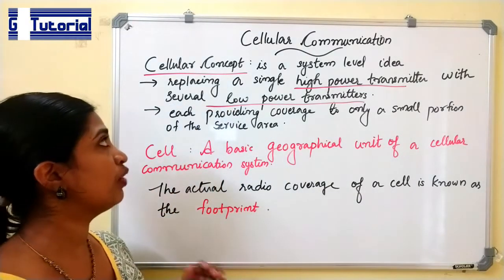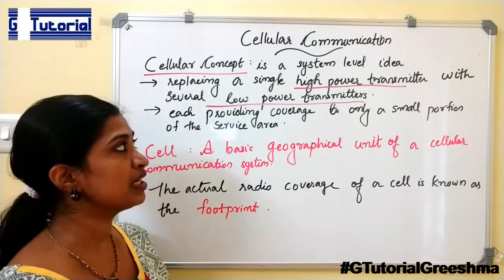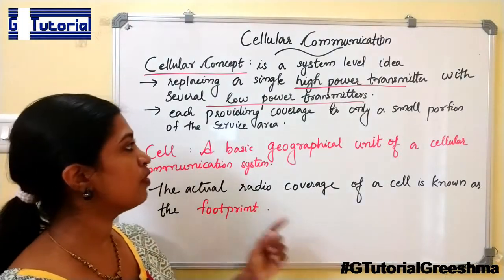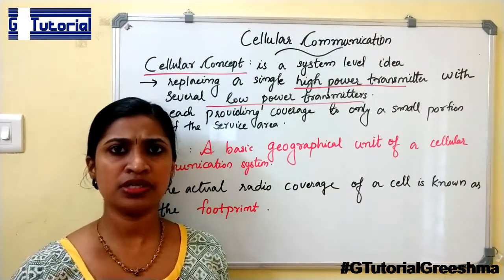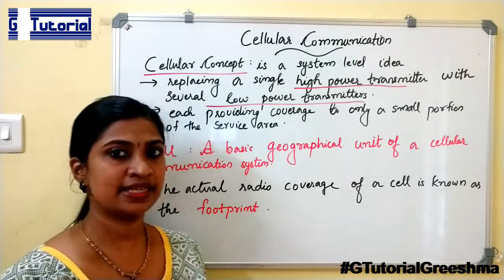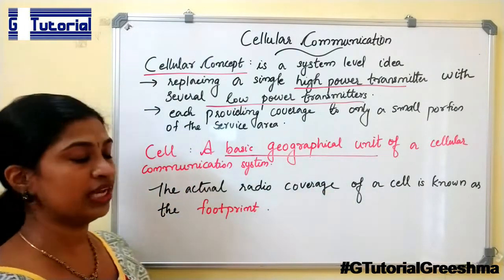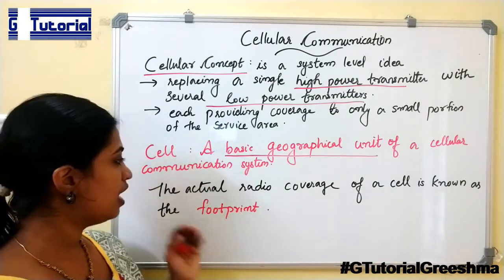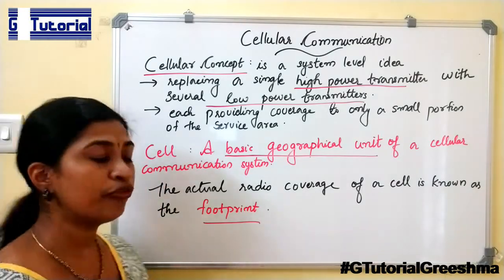First, let us see what is meant by the cellular concept. It is a system-level idea where we replace a single high-power transmitter with several low-power transmitters, each providing coverage to only a small portion of the service area. We divide the entire geographical area into several small portions called cells. A cell is the basic geographical unit of a cellular communication system, and the radio coverage of a cell is known as its footprint.